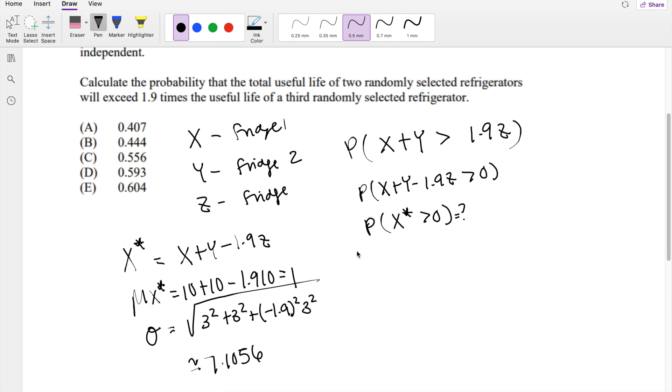So we have everything we need to normalize this sucker out. So X star minus mean of X star divided by the standard deviation of X star is greater than 0 minus the mean, which is, we found was 1, divided by the standard deviation, which we found to be 7.1056. Right? And then this is exactly just a definition of Z. So this is Z is greater than negative 0.1407.